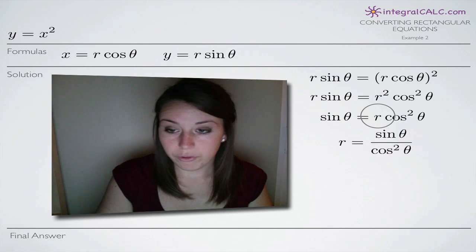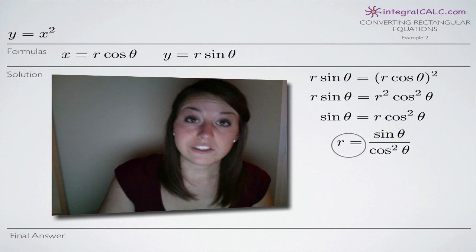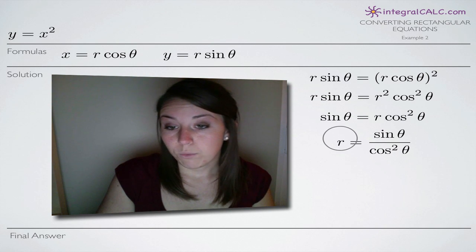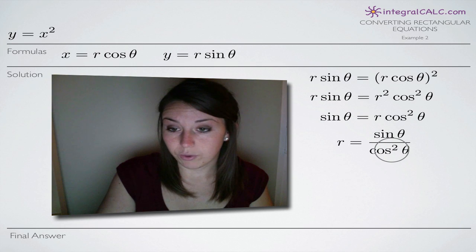Now we'll divide both sides by cosine squared of theta because remember we're trying to solve for r. So we want to get r by itself which leaves us with sine of theta over cosine squared of theta.